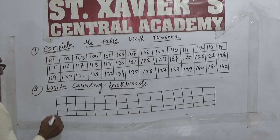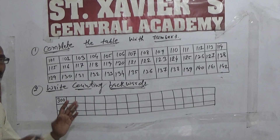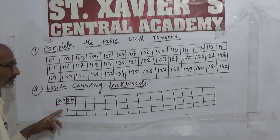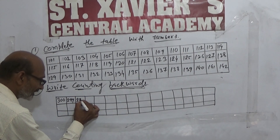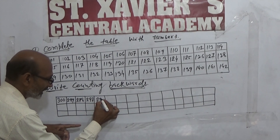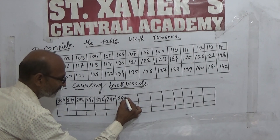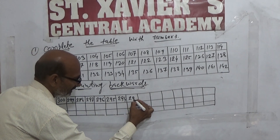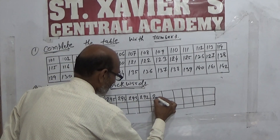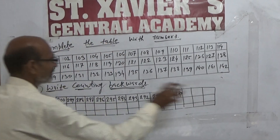So we will make it like this. Suppose we give 300 and backward counting — so we will make it like this: 299, 298, 297, 296, 295, 294, 293, 292, 291, 290, 289 — ऐसा ही क्या करता है।